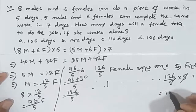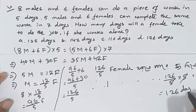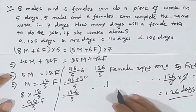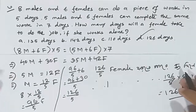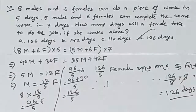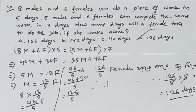So 126 divided by 5 is the female value, and the answer is correct. Thank you very much for watching this video. I will tell you more in the next episode. Thank you.